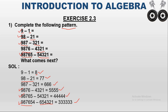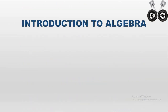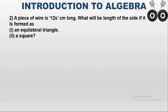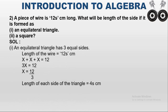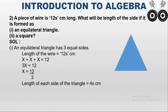Some rules are followed to complete the pattern here. The second problem: a piece of wire is 12 centimeters long. What will be the length of each side if it is formed as an equilateral triangle? An equilateral triangle has all sides equal.